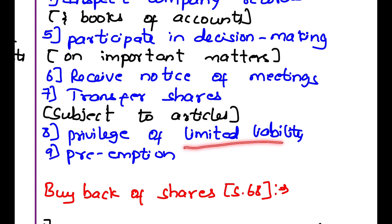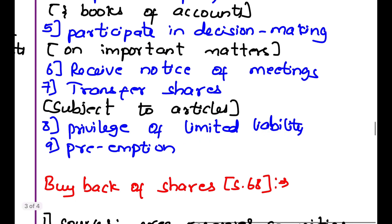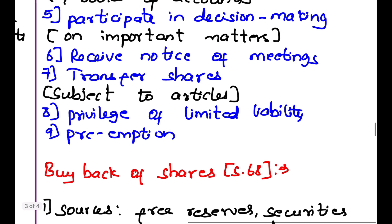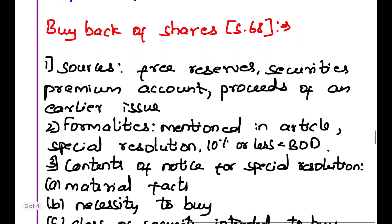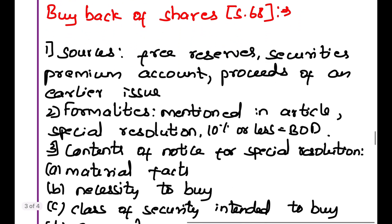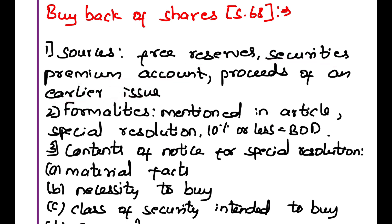Further rights include the privilege of limited liability — shareholders can limit their liability in the company. Also, the right to preemption — if a shareholder is selling his share, the first offer must be made to other shareholders. Buyback of shares under Section 68: the buyback can be done only through limited sources — the free reserves of the company, the securities premium account, and the proceeds of an earlier issue.